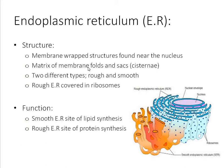Moving to the endoplasmic reticulum: it is a membrane-wrapped structure found near the nucleus, a matrix of membranes, folds, and sacs called cisternae. We've got two main types: rough and smooth endoplasmic reticulum. The rough ER is covered or freckled with ribosomes and is the site of protein synthesis — most or all of the proteins in the cell are composed here. The smooth endoplasmic reticulum has no ribosomes and is the site of lipid synthesis, very important for membranes and other structures.